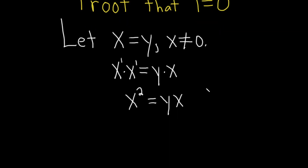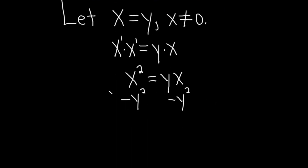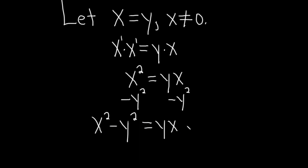When you have an equation you're allowed to add or subtract things from both sides. So let's go ahead and subtract y squared from both sides. This gives us x squared minus y squared, and this is equal to y times x minus y squared.